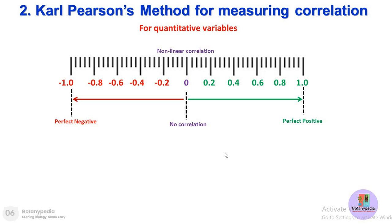On the other hand, qualitative data — such as gender, which can be male or female — cannot be given a number without specific coding. By nature, qualitative data is not numerical, whereas quantitative data is expressed in terms of numbers. What we are measuring throughout this lecture is the correlation coefficient r, which represents the degree of correlation between two parameters.